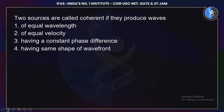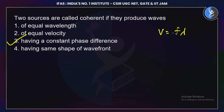Two sources of light produce interference when they have the same wavelength. The correct option is equal wavelength — this is the condition for coherent sources to produce a stable interference pattern.